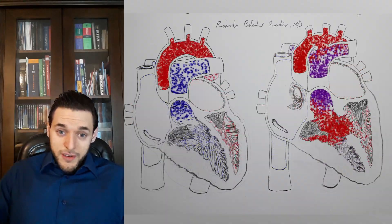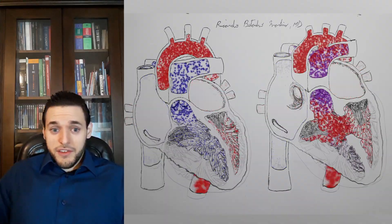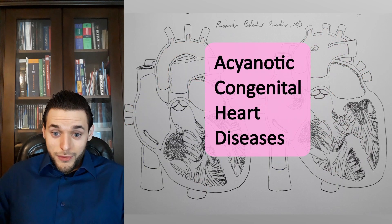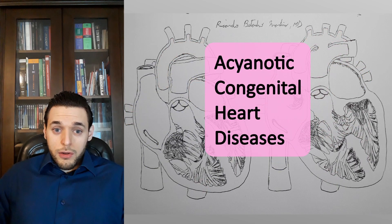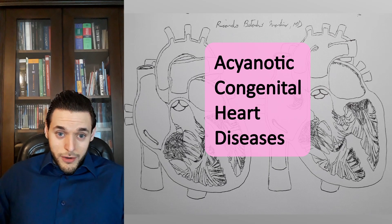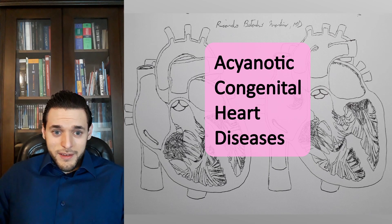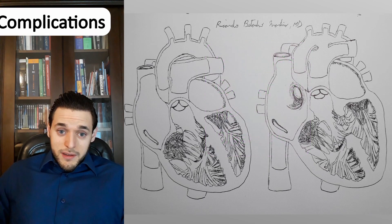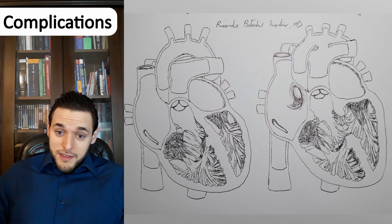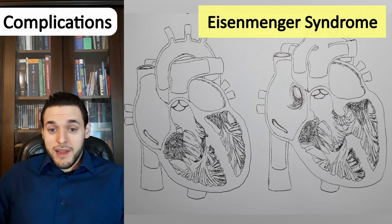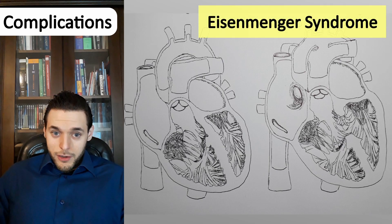That is why these — some of the most common cardiac abnormalities found overall, including in neonates — are considered acyanotic congenital heart diseases. That will be the case at least until Eisenmenger's syndrome, one of the late complications, develops.